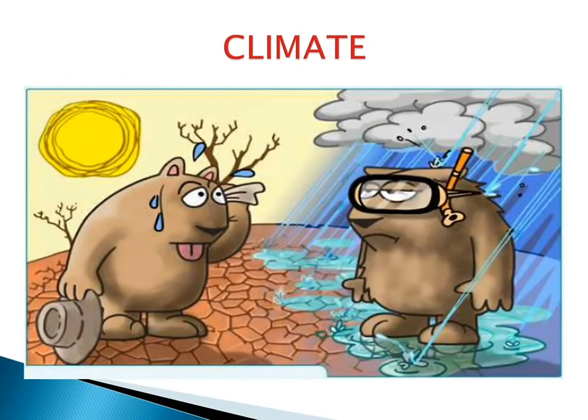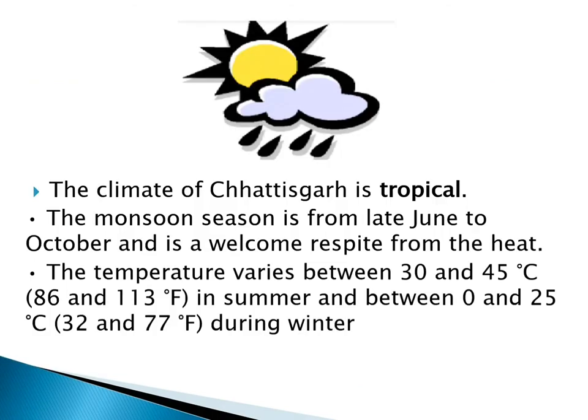Climate: The climate of Chhattisgarh is tropical. The monsoon season is from late June to October and is a welcomed respite from the heat. The temperature varies between 30 to 45 degrees in summer and between 0 to 25 degrees during winters.